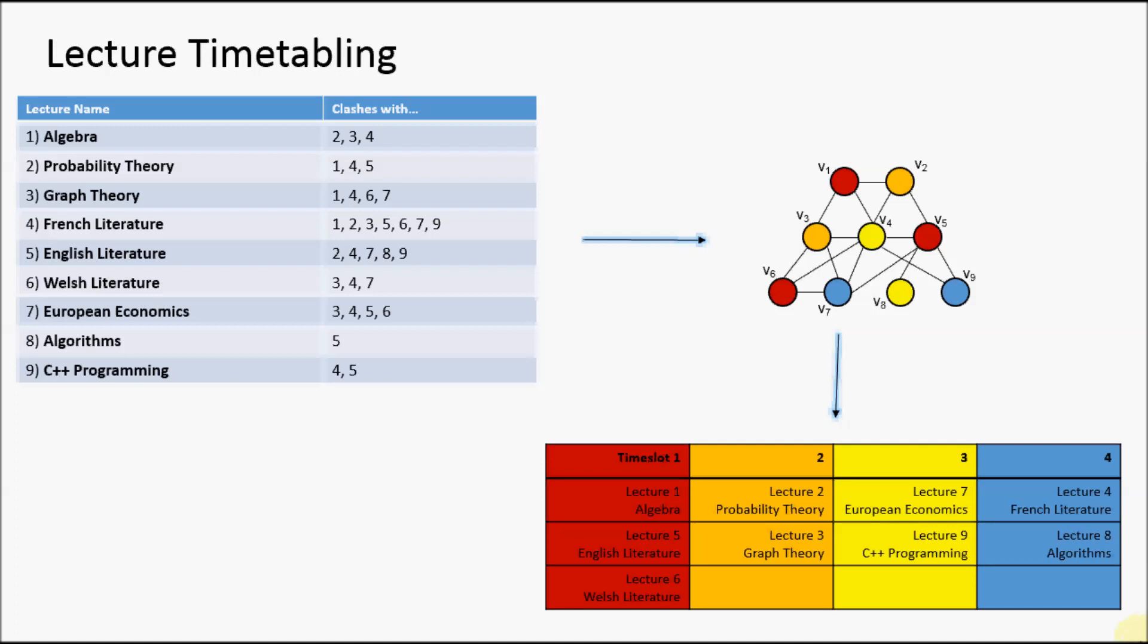We might be wanting to satisfy other constraints, not just those expressed within this graph coloring model. One way of doing this is to design operators that allow us to move through the space of feasible colorings in order to optimize secondary objective functions.